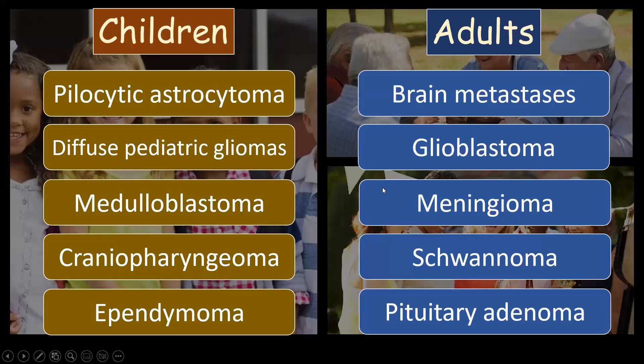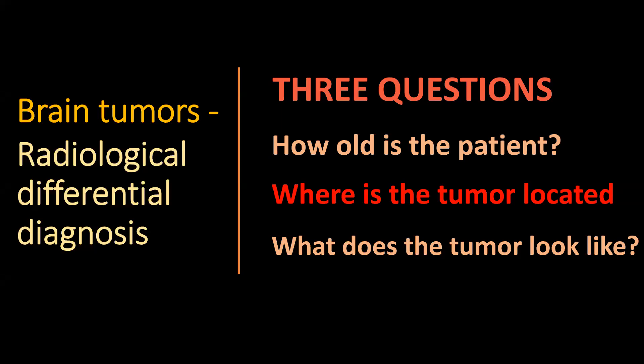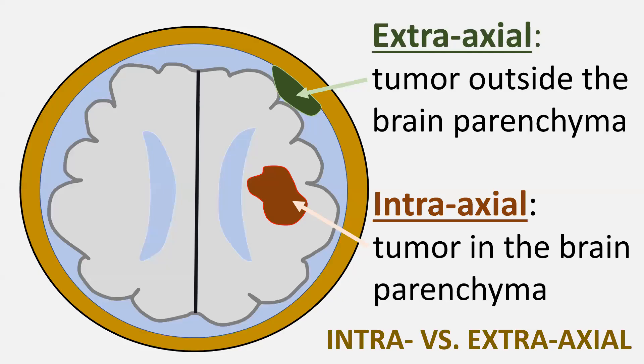So just answering the question — child or adult — gives you a completely different list of the five most frequent tumours. Always start with: what age is my patient? The second question is: where is the tumour located? For this I want a broad answer: is the tumour located inside or outside the brain parenchyma? A tumour inside the parenchyma is called intra-axial; a tumour outside is extra-axial.